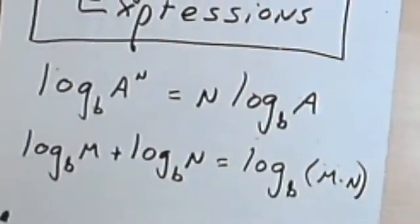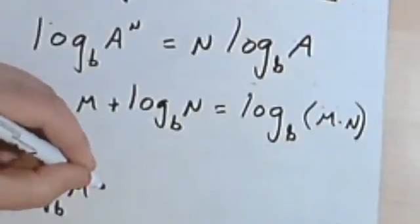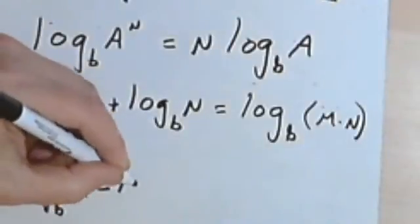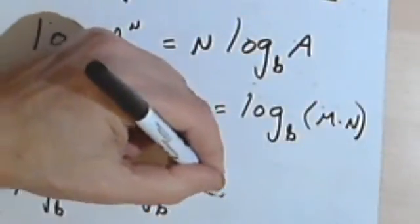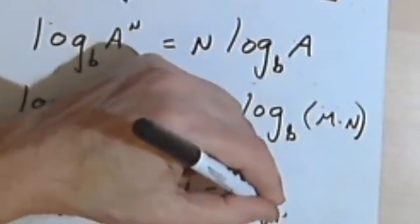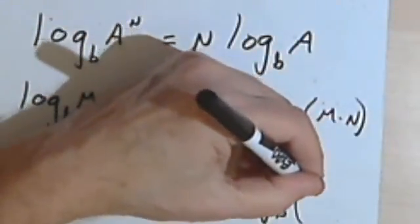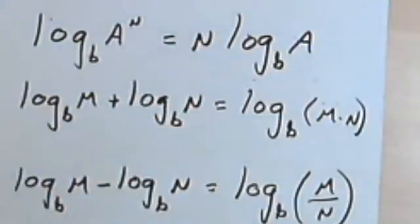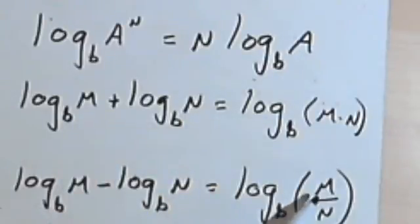Very often when you've got a product property, you've also got a quotient property to go along with it, and so we have a quotient property for logarithms. This says that the log base b of m minus the log base b of n can be combined into one log — the log base b of the fraction m over n. So I've used the two arguments, but instead of multiplying them as with the product property, I'm making a fraction and dividing them for the quotient property.